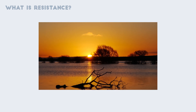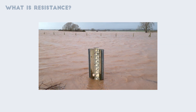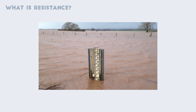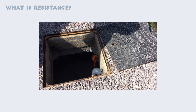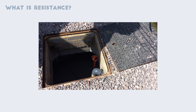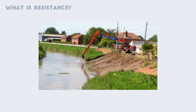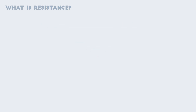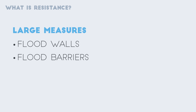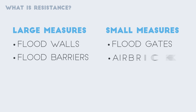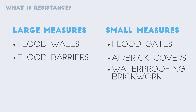Given the impacts of flooding on people's lives, there is a need to adapt to the potential risks of inundation by floodwater. One method of doing this is using resistance measures — physical changes that prevent floodwaters from entering buildings, or minimise the damage from floodwaters. Examples range from large infrastructural projects like floodwalls and barriers, to smaller scale measures such as floodgates, airbrick covers — a waterproof covering for brickwork to prevent water coming in — or flood pumps to remove water before it floods the building.